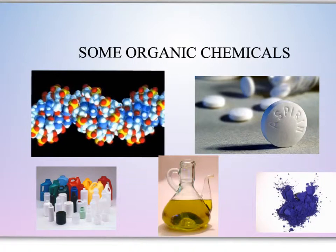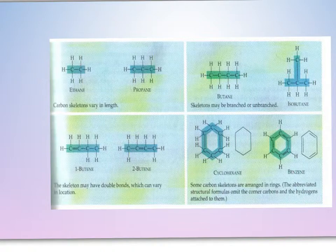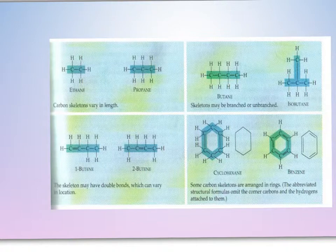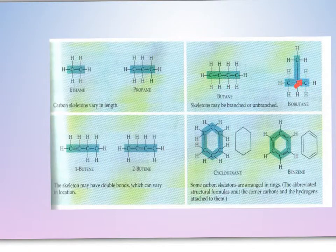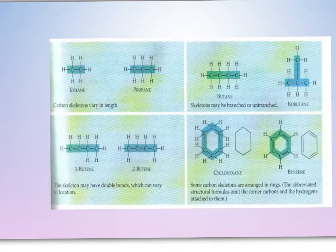Isomers are organic molecules having the same chemical formula but different structural formulas, and because they have different structural formulas, they will have different characteristics. Looking at this example, these two compounds have four carbons and ten hydrogens each — so their formula is the same — but their shapes are different. Because the shapes are different, these are two different chemical compounds, and so they would be called isomers.